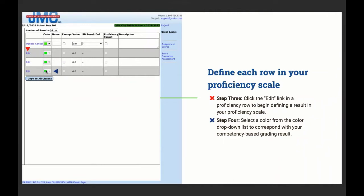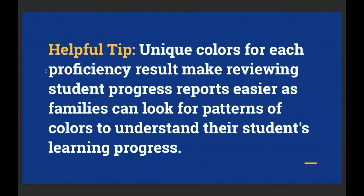Step three, click the edit link in a proficiency row to begin defining a result in your proficiency scale. Step four, select a color from the color drop-down list. Unique colors for each proficiency result make reviewing student progress reports easier, as families can look for patterns of colors to understand their student's learning progress. Something like a stoplight — red, yellow, green — indicates progress easily to families. Stay away from colors like magenta and pink that some families might interpret differently.